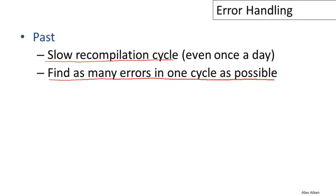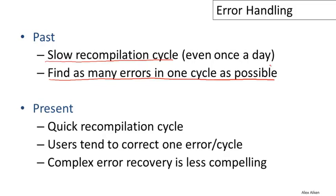The goal then was to find as many errors in one cycle as possible, give good feedback, fix as many errors, and avoid as many retry cycles as possible — even automatically correcting the program so results might be useful for further debugging. Today we're in a completely different situation with a fast, almost interactive recompilation cycle. Users generally aren't interested in finding many errors; they tend to correct only one error per cycle and fix the first one, since fast compilation makes that the most productive approach. As a result, complex error recovery today is just less compelling than it was a few decades ago.